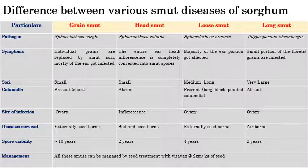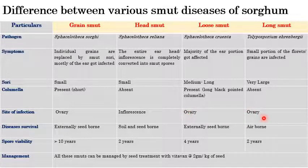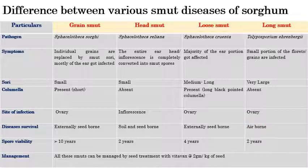Regarding site of infection: in grain smut it is the ovaries; in head smut it is the inflorescence; and in both loose smut and long smut the infection site is the ovary. For disease survival: grain smut survives as an externally seed-borne pathogen; head smut survives as both soil-borne and seed-borne; loose smut is externally seed-borne; and long smut survives as an airborne pathogen — the only airborne one among these four.